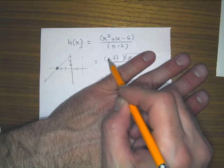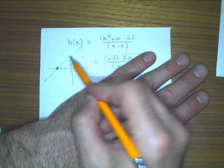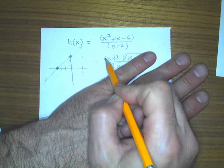And what's left? y equals x plus 3. It crosses the y-axis at positive three.